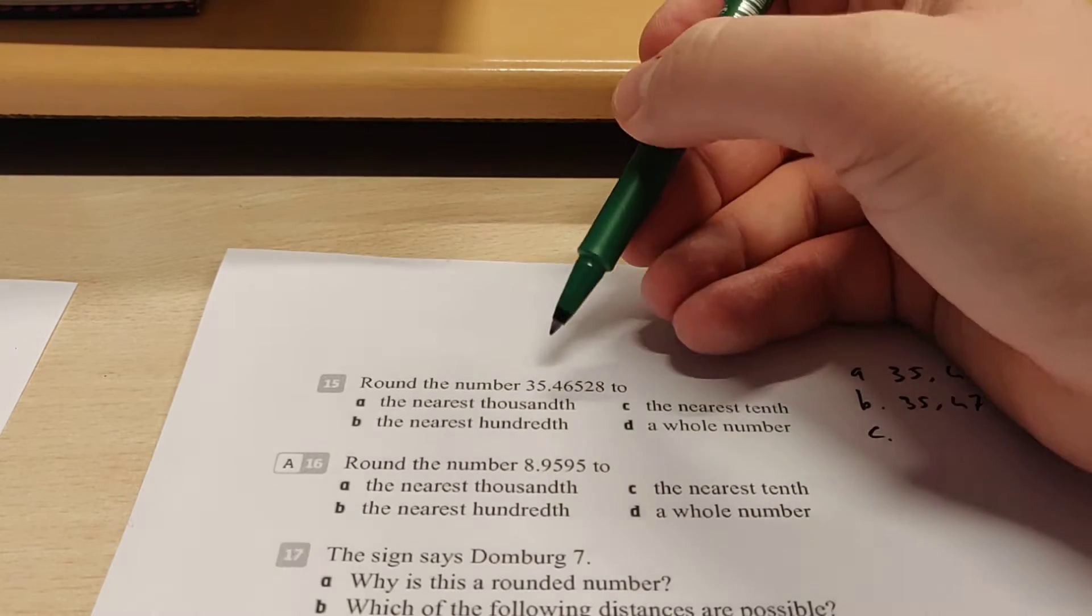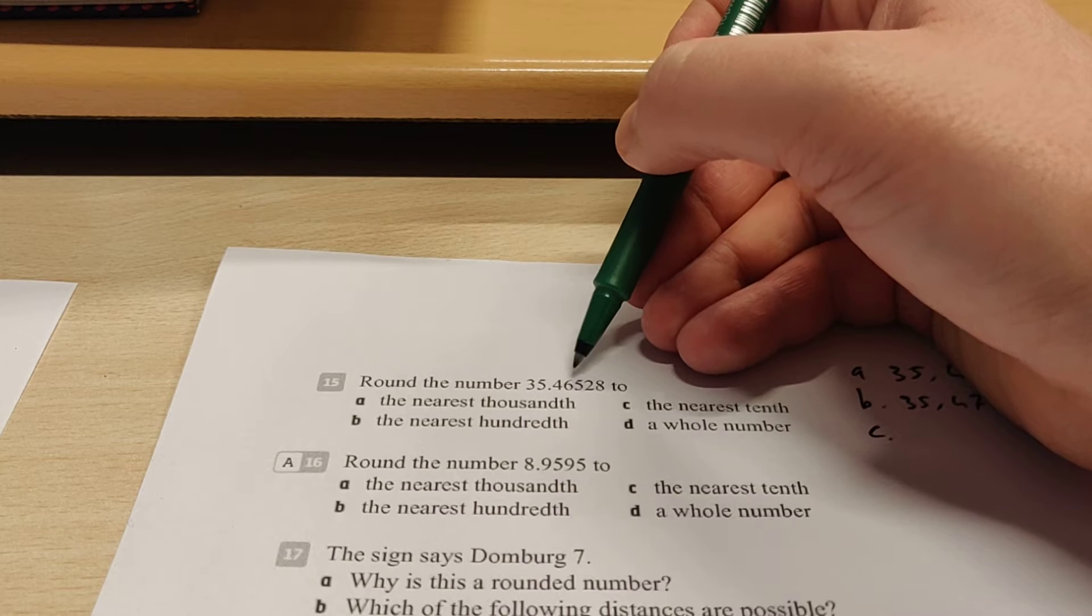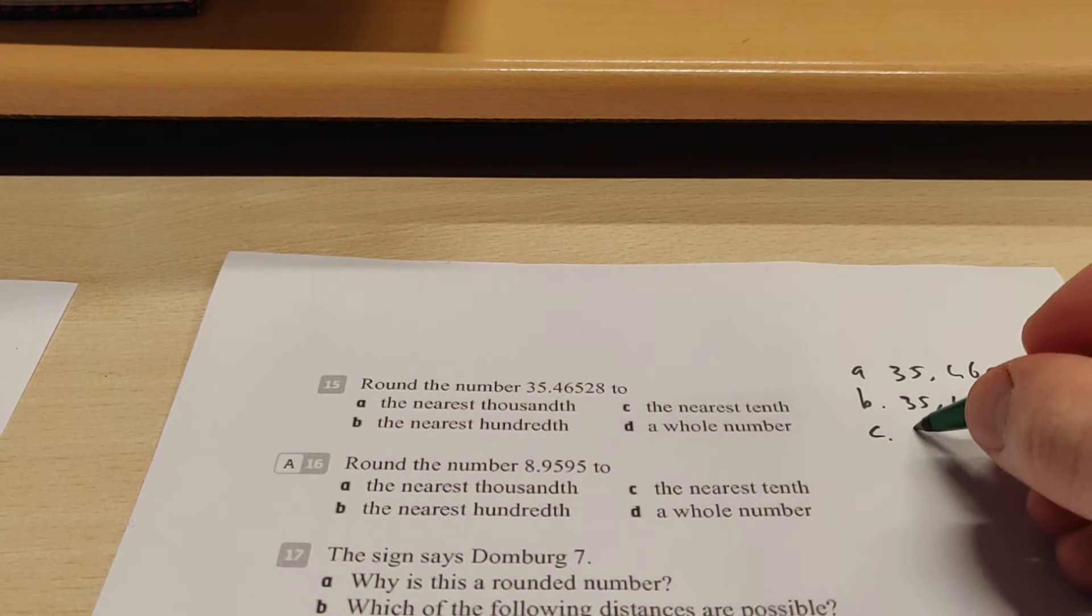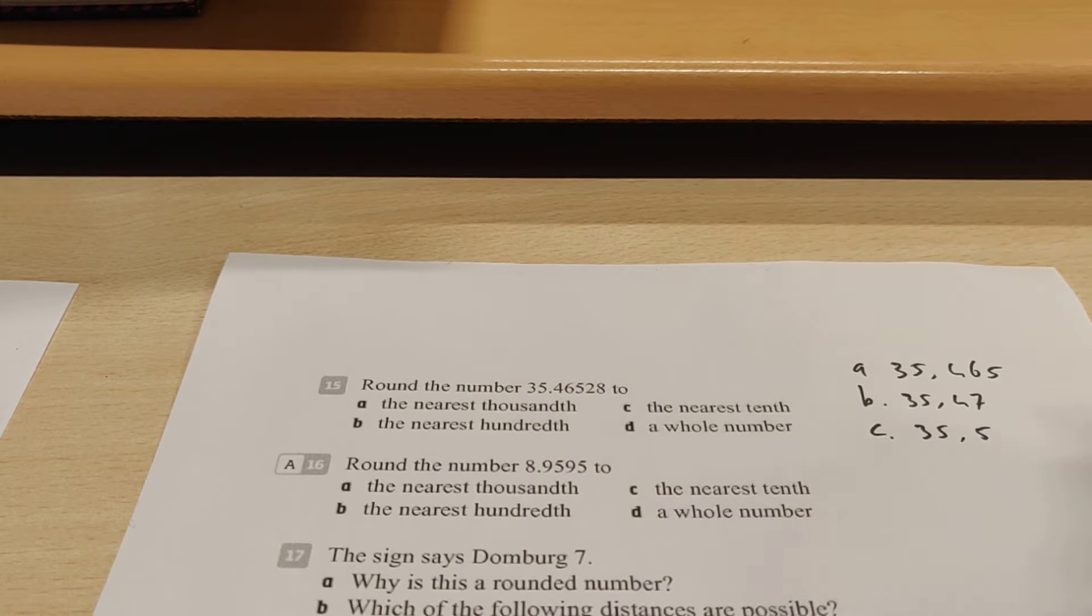Then C, the nearest tenth, there's this number, that's a 4. So we take a look at the next number, that's a 6. So that means you go up, so the 4 becomes a 5. So you have 35.5.